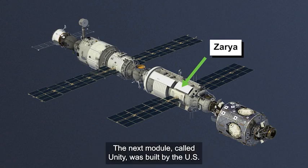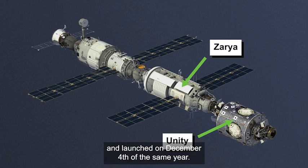The next module, called Unity, was built by the US and launched on December 4 of the same year.